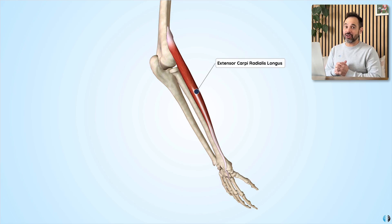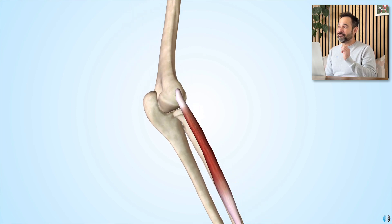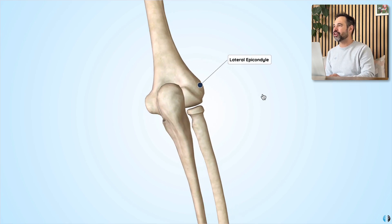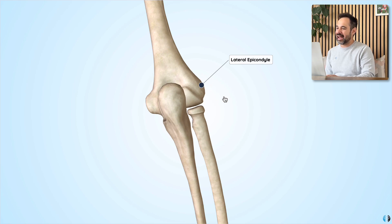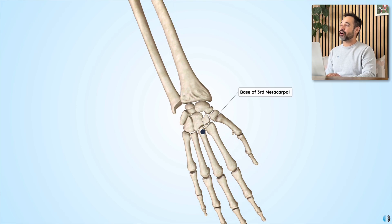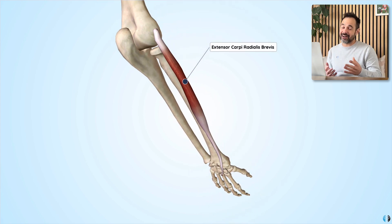The key actions of extensor carpi radialis longus are wrist extension and radial deviation. Next, we're going to talk about extensor carpi radialis brevis. This muscle is the first that originates from the lateral epicondyle of the humerus — that clear bony protrusion on the lateral side of the humerus at the elbow joint, synonymous with tennis elbow, as we will come to later. This muscle also runs down the posterior aspect of the radius and inserts into the base of the third metacarpal. Its key action, like its counterpart, is to extend the wrist and assist in radial deviation.